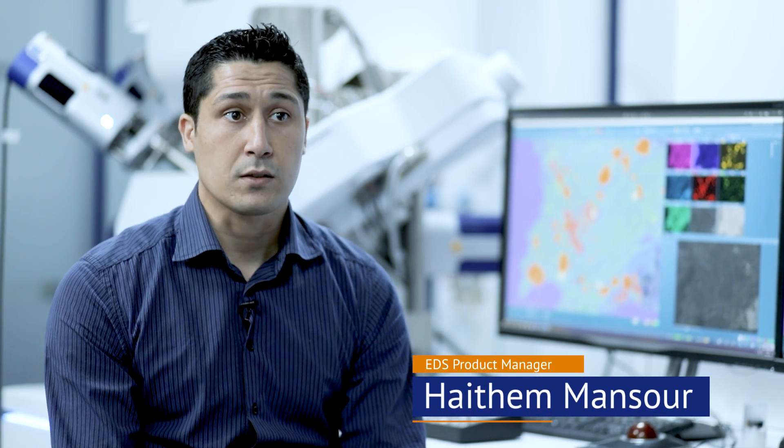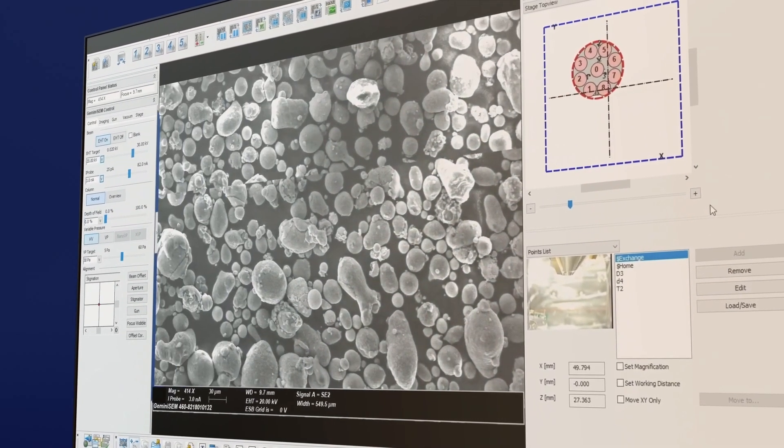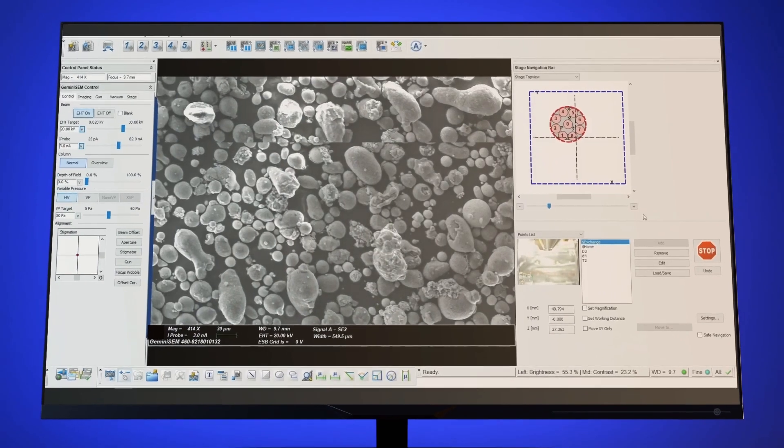Imaging in the SEM has always been in black and white. We mainly use two signals: secondary electrons and backscattered electrons that result in a black and white image. Secondary electrons typically give information about topography; backscattered electrons give us indicative information about composition. Users usually trust these two imaging techniques and use their instinct to find their areas of interest.